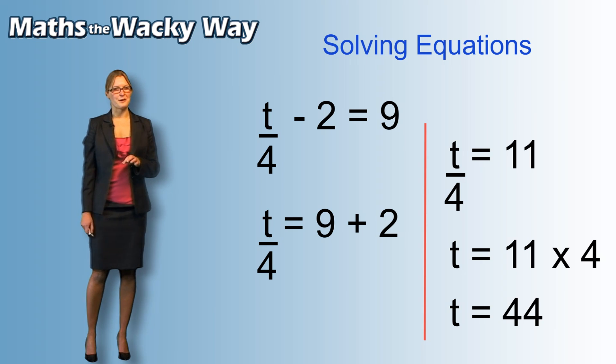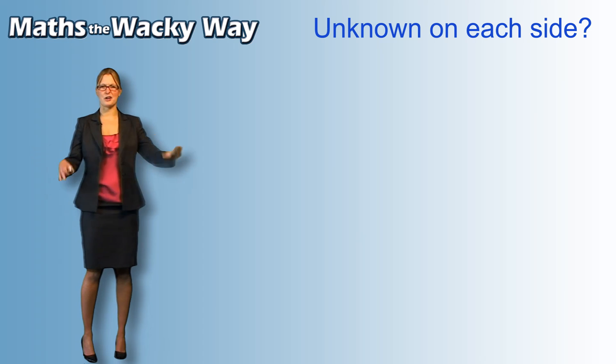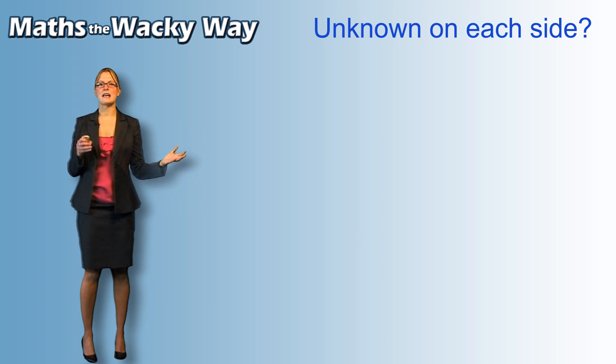Something you might see that's slightly different. We might see a question where we have an unknown on either side. Now, the unknown will hopefully be the same and if it is the same, we just need to come up with a method that will bring the unknowns together.